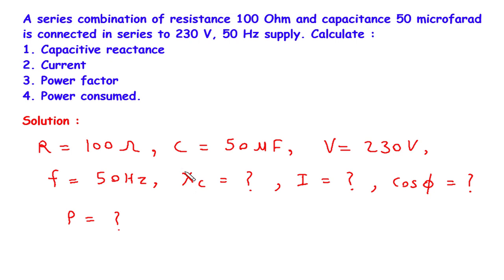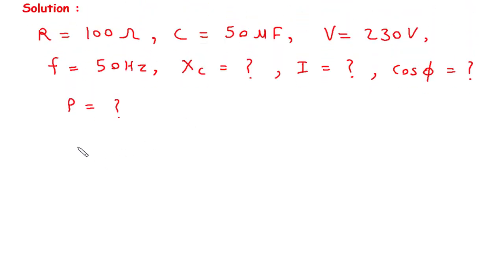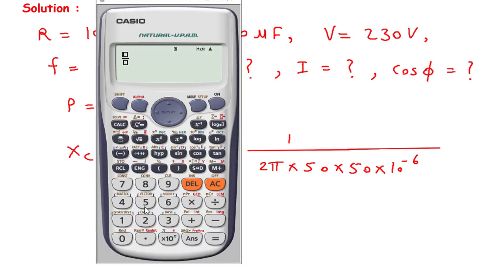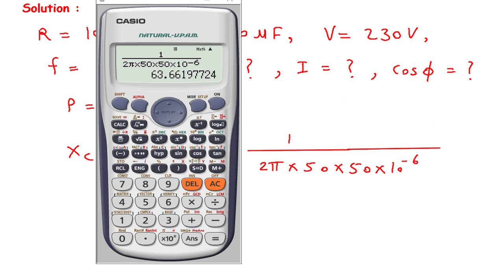First of all we will find Xc. The formula for Xc is: Xc is equal to 1 upon 2πfC. So it is 1 upon 2π multiplied by f, which is 50, multiplied by C, which is 50 microfarad, that is 50 multiplied by 10 to the power minus 6. Solving this, Xc is equal to 63.66 Ohm.